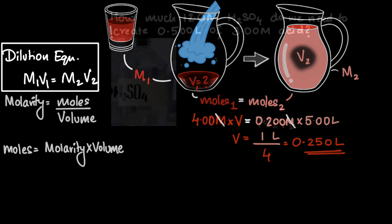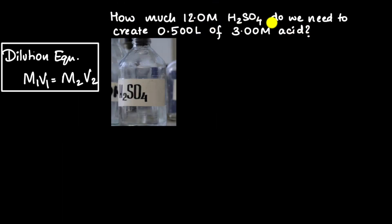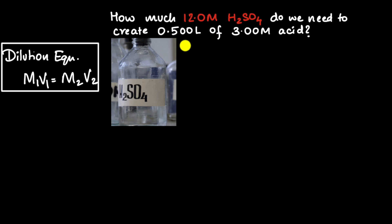Let's try another problem: how much of 12 molar H₂SO₄ do we need to create 0.5 liters of 3 molar acid? We have a 12 molar H₂SO₄ stock solution — that's the very concentrated solution typically found in labs. We want to create a much more dilute 3 molar H₂SO₄ solution, so we'll take a little bit of the concentrated solution and add it to a lot of water. The question is: how much of the concentrated solution do we need?